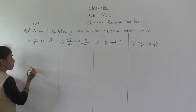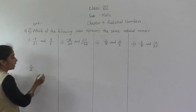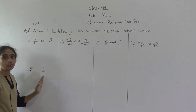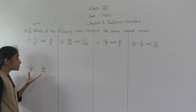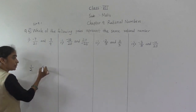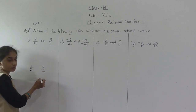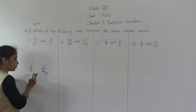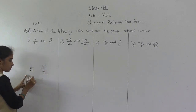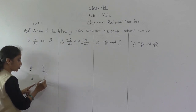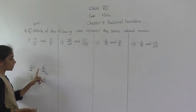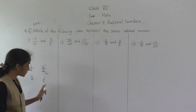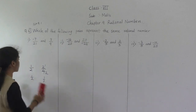For example, if we have 1 upon 2 and 2 upon 4, we have to check whether these are the same or not. We find the lowest term (simplest form): 1 upon 2 simplifies to 1/2, and 2 upon 4 also simplifies to 1/2. So both numbers are the same. We use this same method for all pairs.